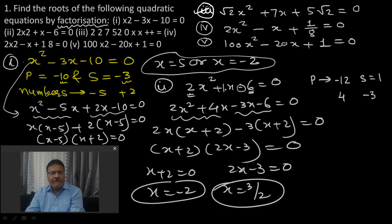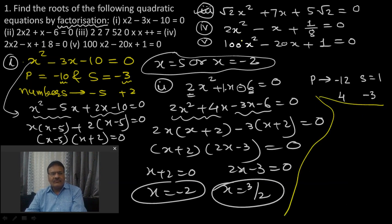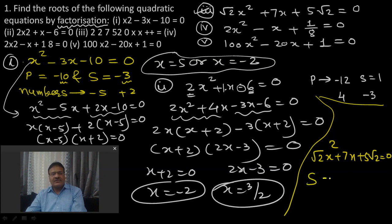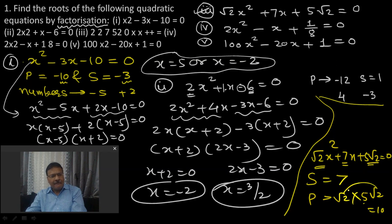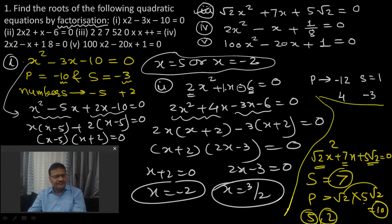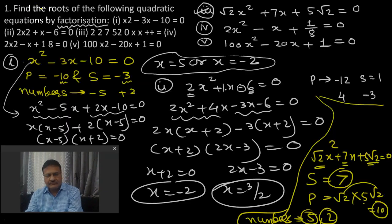Third question: √2·x² + 7x + 5√2 = 0. Sum needed = 7 (middle term coefficient). Product = √2 × 5√2 = 5 × 2 = 10. So sum = 7 and product = 10 — the two numbers are 5 and 2. Now split the equation: √2·x² + 5x + 2x + 5√2 = 0.